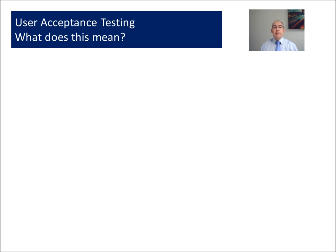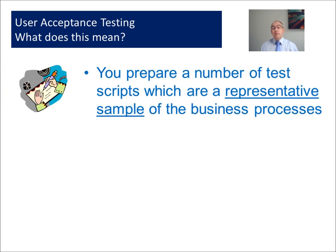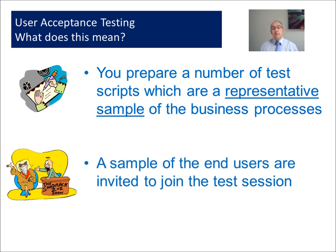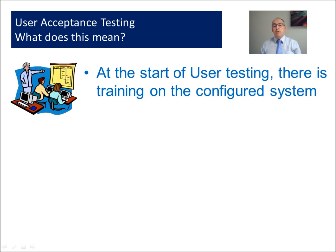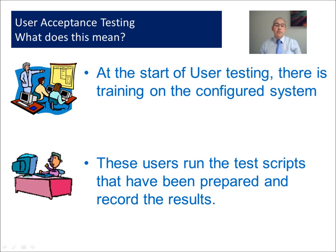The theory is great — but what does this mean to us? Well, the first thing is that the project assurance role, perhaps members of the end user community, need to prepare a number of test scripts that provide representative sample processes to be tested from the system. We invite a sample of end users to join the test session so they can get involved and provide their feedback. At the start of user acceptance testing we are likely to train that subset of users who are going to run the tests so they know how the system works, and then these users will run those test scripts for the representative sample business processes and record the results.